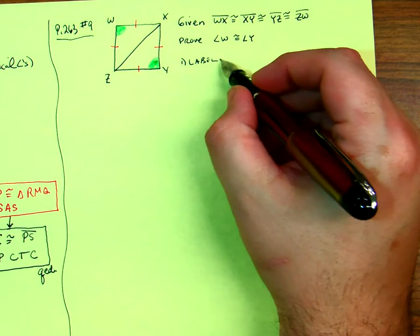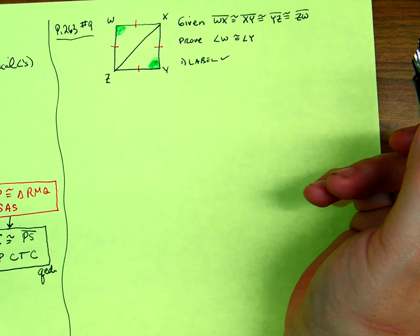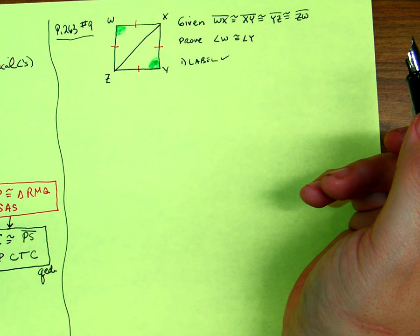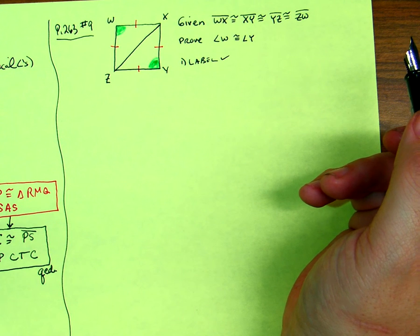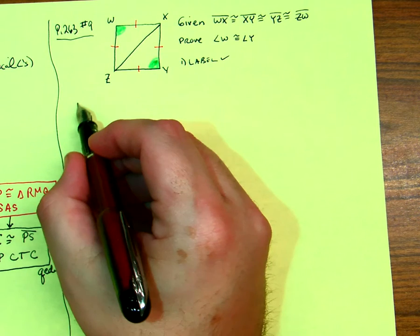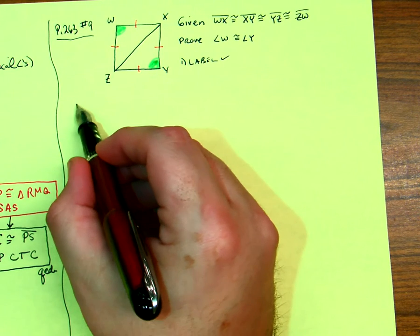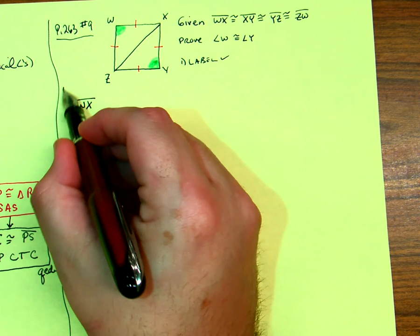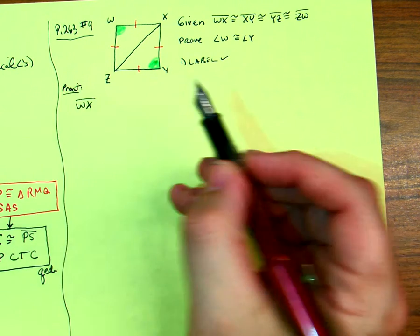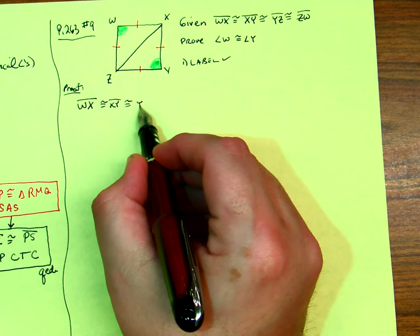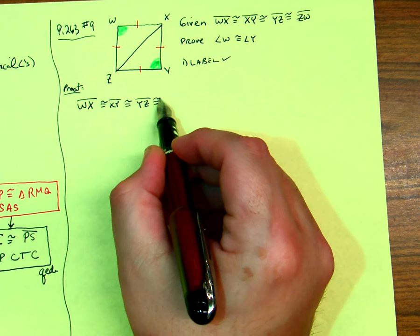So we labeled, and now we need to start the proof. For the proof, WX is congruent to XY, which is congruent to YZ, which is congruent to ZW, given.